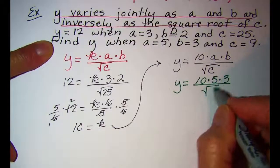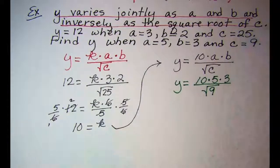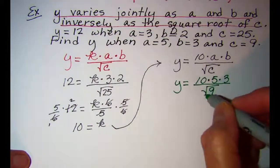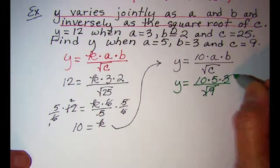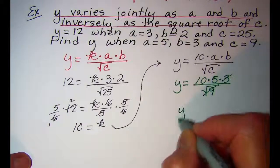So I need the square root of 9. The square root of 9 is 3 so I can cancel this 3 with this 3 and we get y is equal to 50.